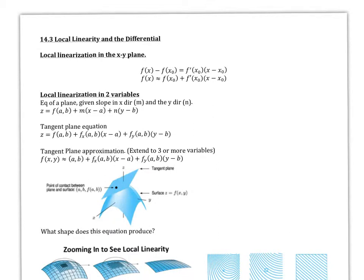So in regular calculus, what we did was local linearization in the xy-plane. All we did was take the equation of the line where the slope was found from the derivative. Then we brought that term over to the other side, and so we get f of x approximated by some initial value plus the change, where the change is determined by the slope and whatever our x value is.